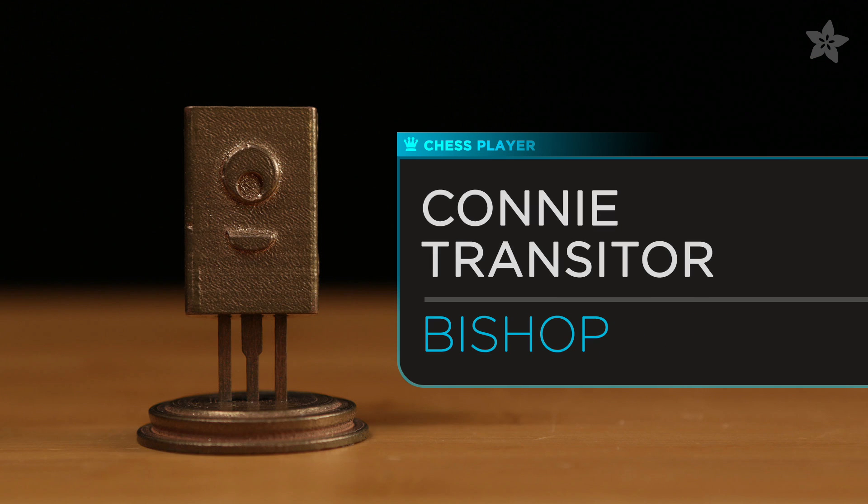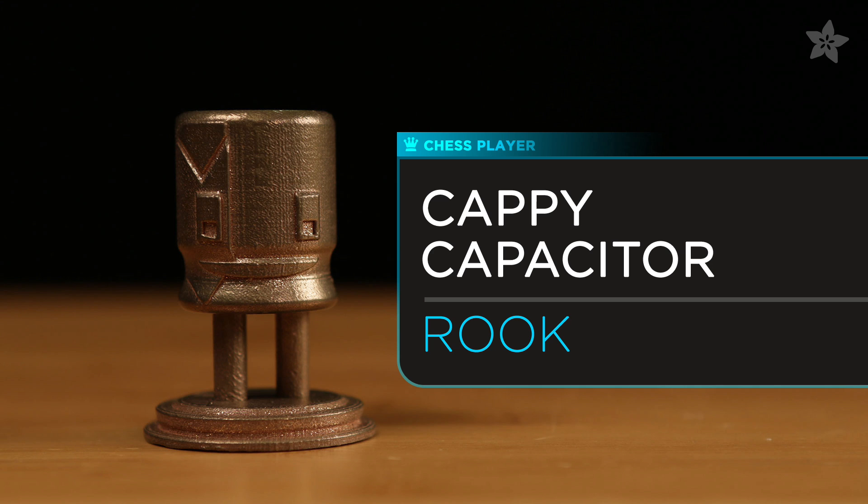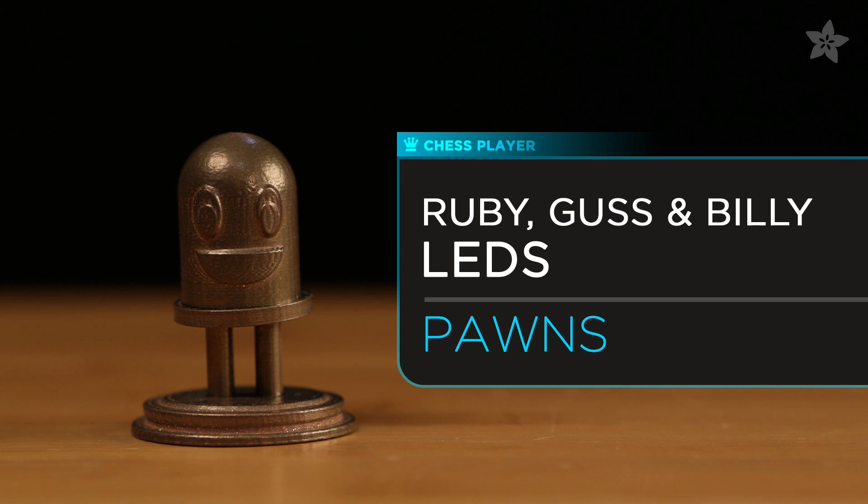Cappy the capacitor serves as the rook, and finally Ruby, Gus, and Billy as the LED pawns.